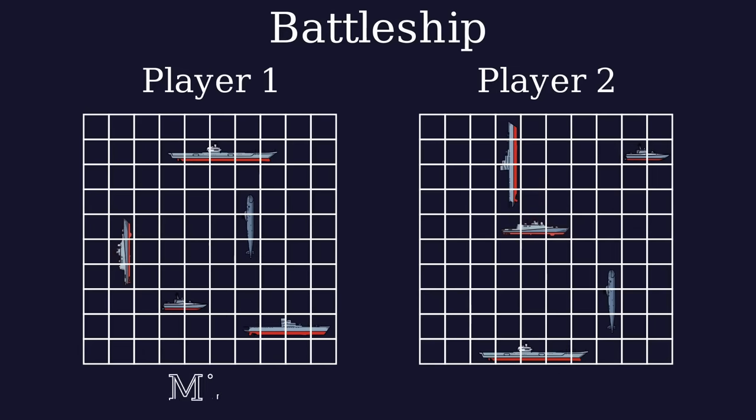After each shot, you only find out if you missed or hit a ship. When you manage to hit all the squares of a ship, your opponent will tell you that their ship has sunk.